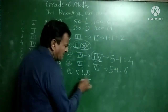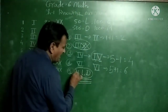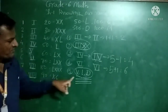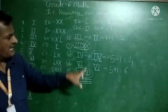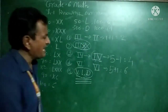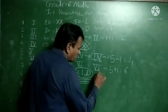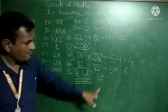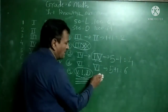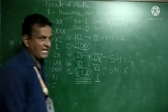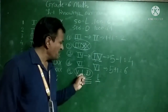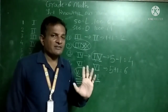Most importantly, the symbols V (5), L (50), and D (500) are never written on the left-hand side of a greater symbol — meaning they are never used for subtraction. For example, we never write LC to mean 100 minus 50. We write only L for 50.